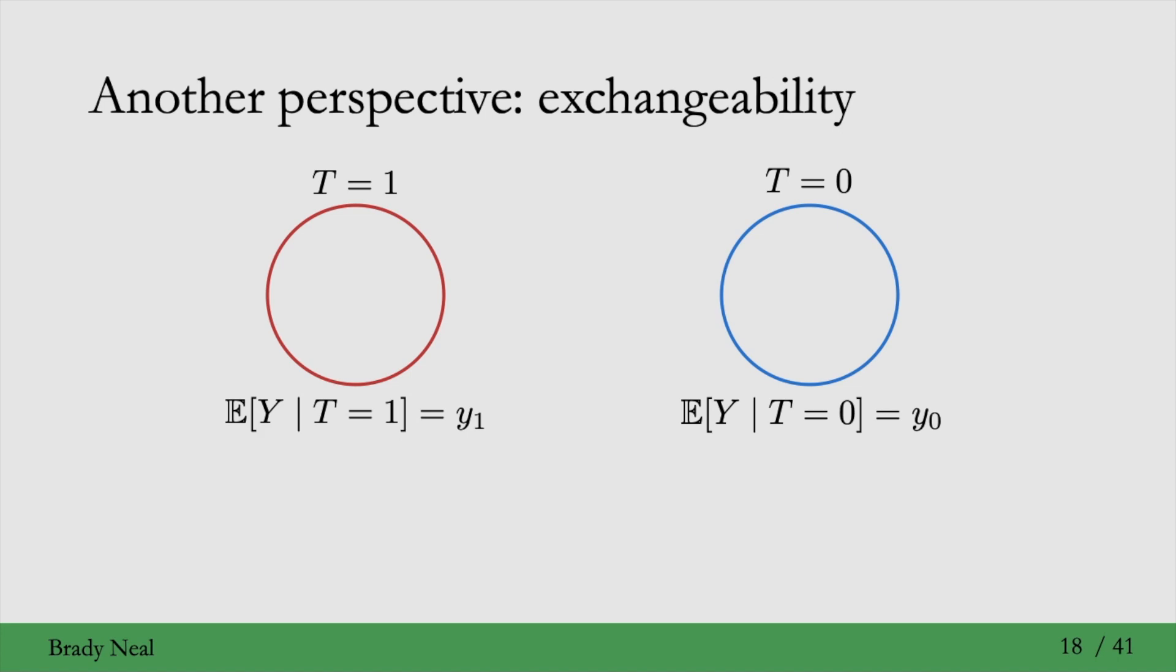To see what the exchangeability perspective has to offer here, consider the treatment group t equals 1 in red, and the control group t equals 0 in blue here. Each of these groups have associated expected values of outcome. So that's expected value of y given t equals 1, and that equals y1 for the treatment group. And similarly, it's y0 for the control group. Let's label the treatment group group A, and the control group group B.